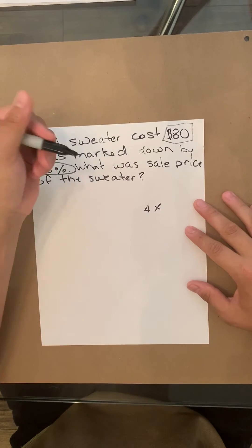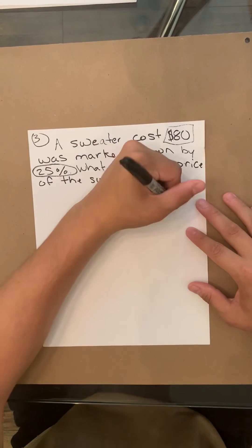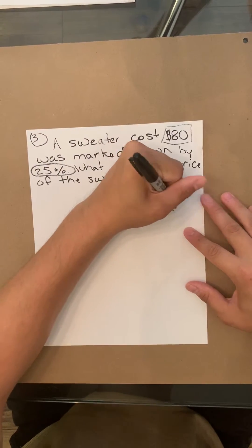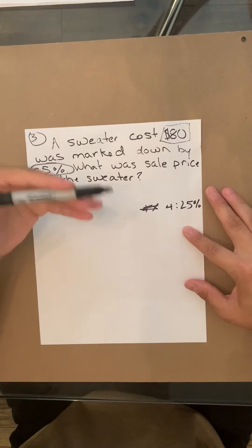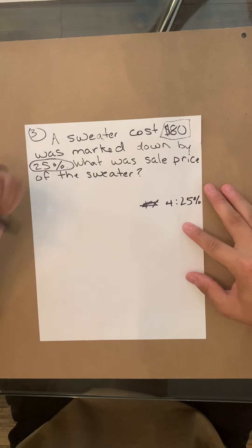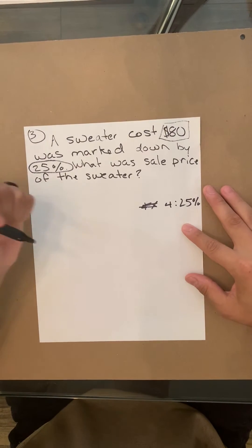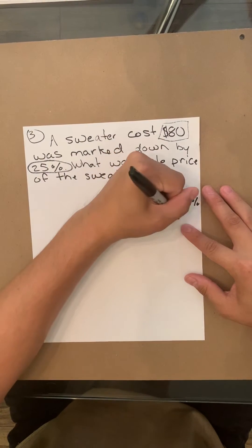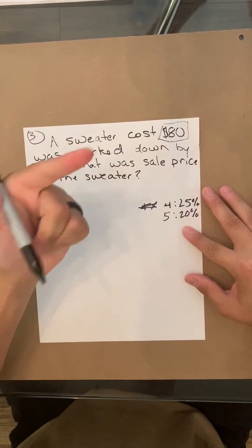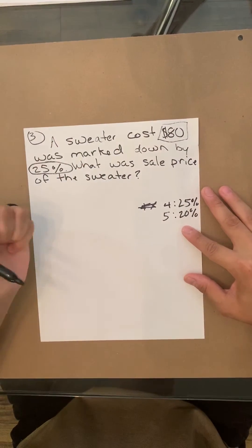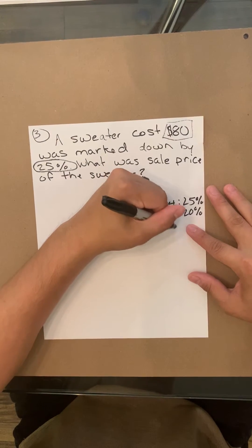Now if it can divide into itself five times, that'll equal 20%: 20, 40, 60, 80, 100. And if it can divide into itself 10 times, that'll equal 10%.